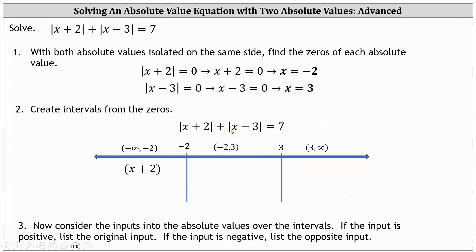Now let's consider the input of x minus three from the second absolute value. X minus three is also negative when x is less than negative two, over the open interval from negative infinity to negative two. Therefore, we list the opposite of the input, or the opposite of x minus three. Using these two expressions, we can eliminate the absolute values in the equation over this interval.